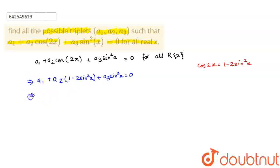If I open the brackets, this implies a1 + a2 - 2a2·sin²(x) + a3·sin²(x). If I take the common terms, I get a1 + a2 together because both are constants.